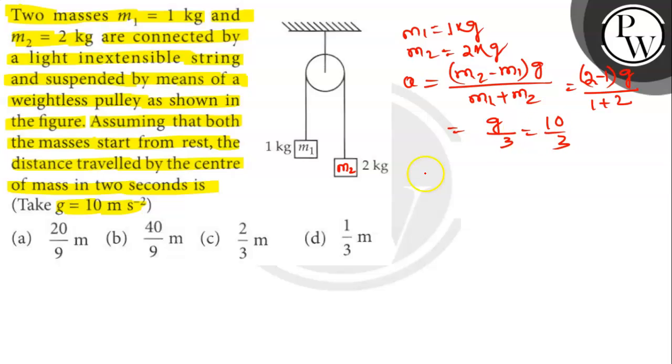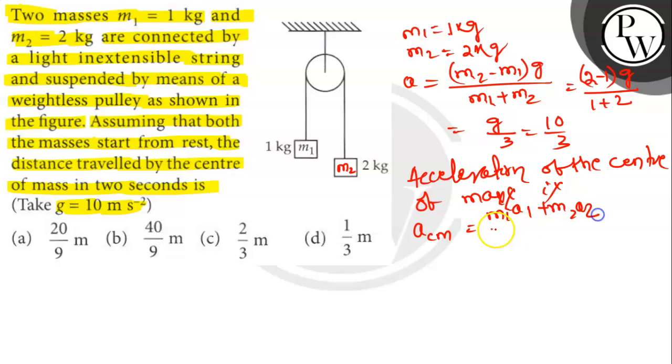Acceleration of the centre of mass. Acceleration of the centre of mass, ACM, equals M1 A1 plus M2 A2 divided by M1 plus M2.